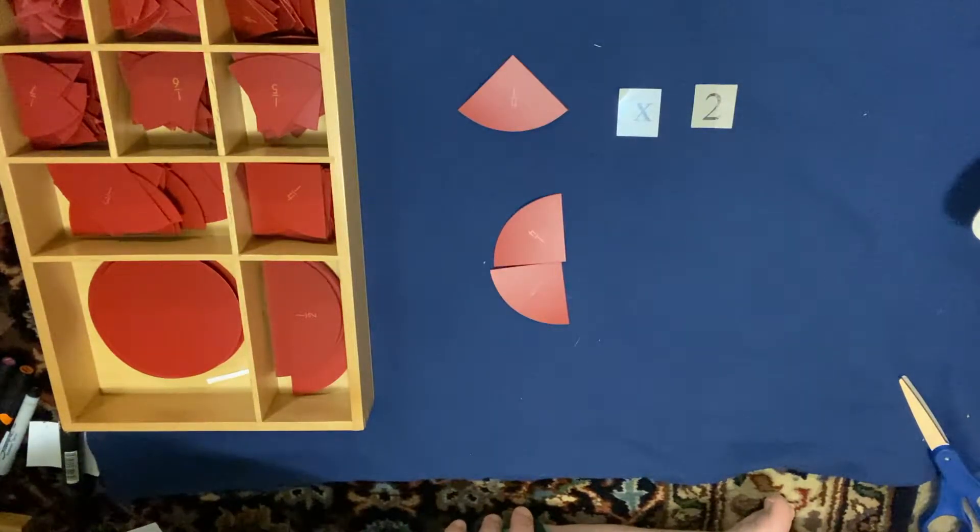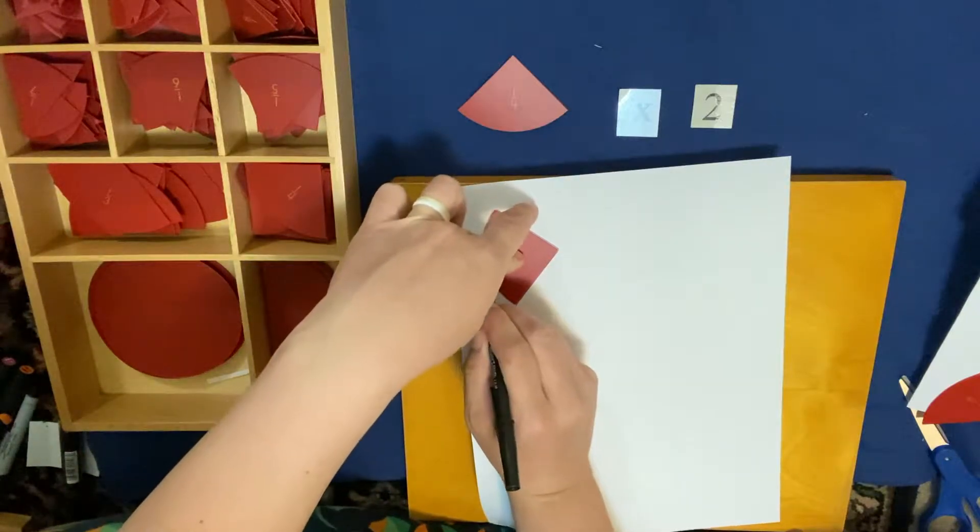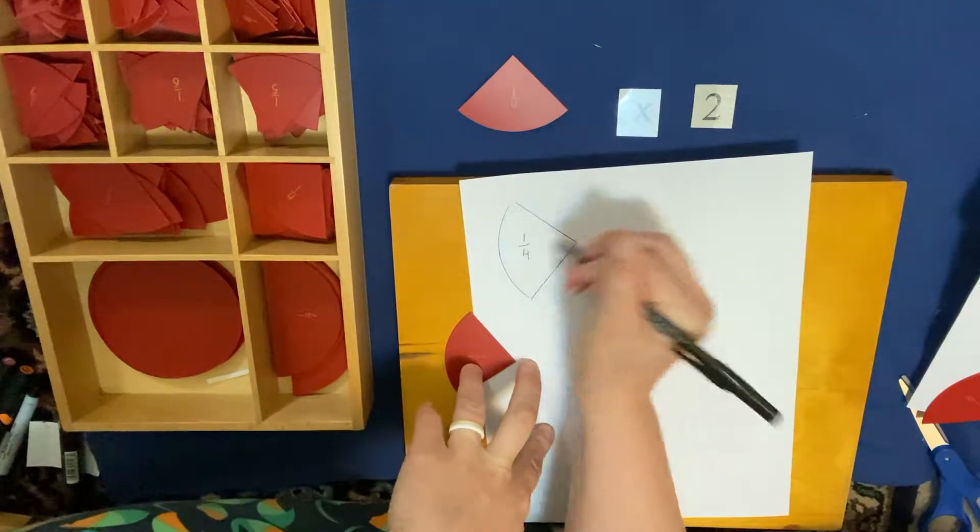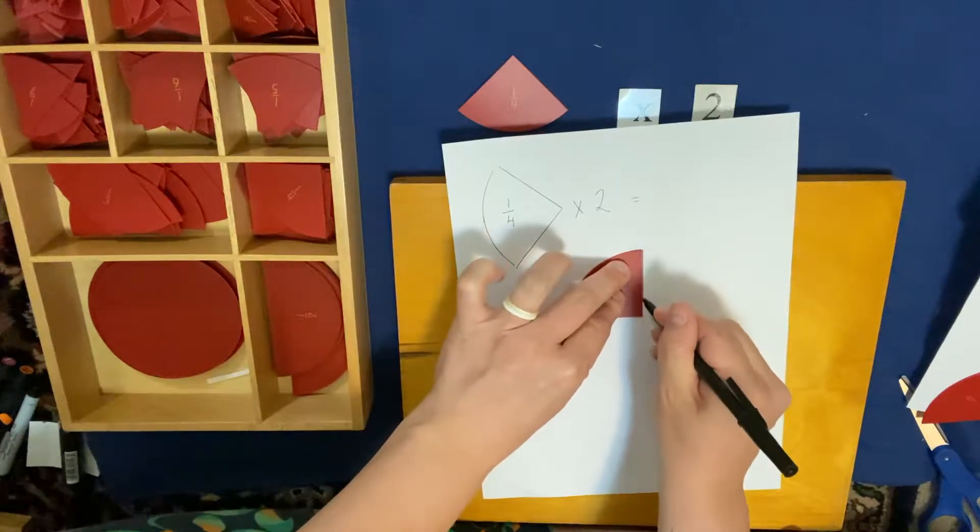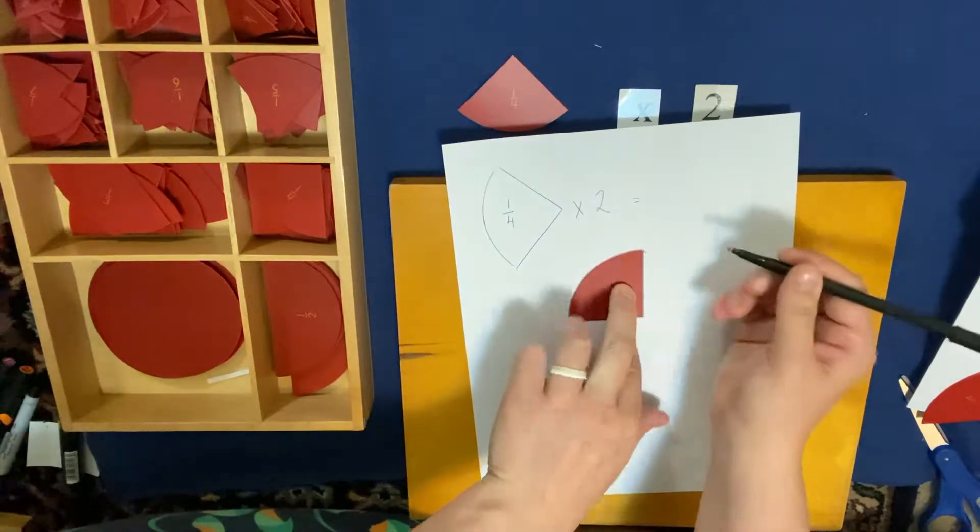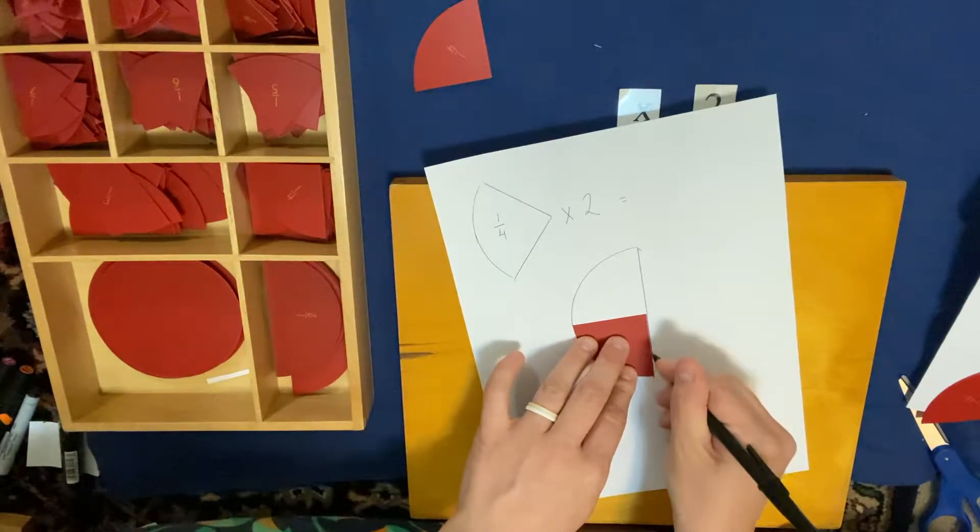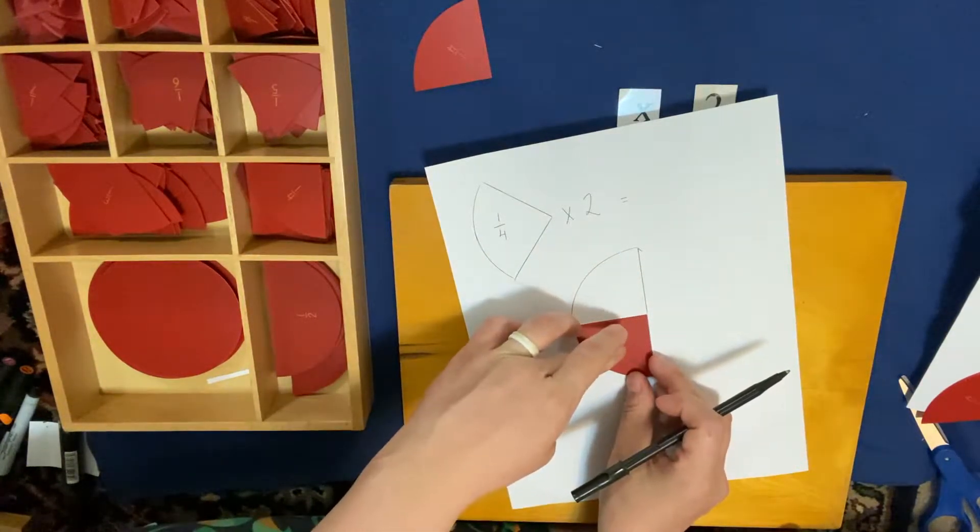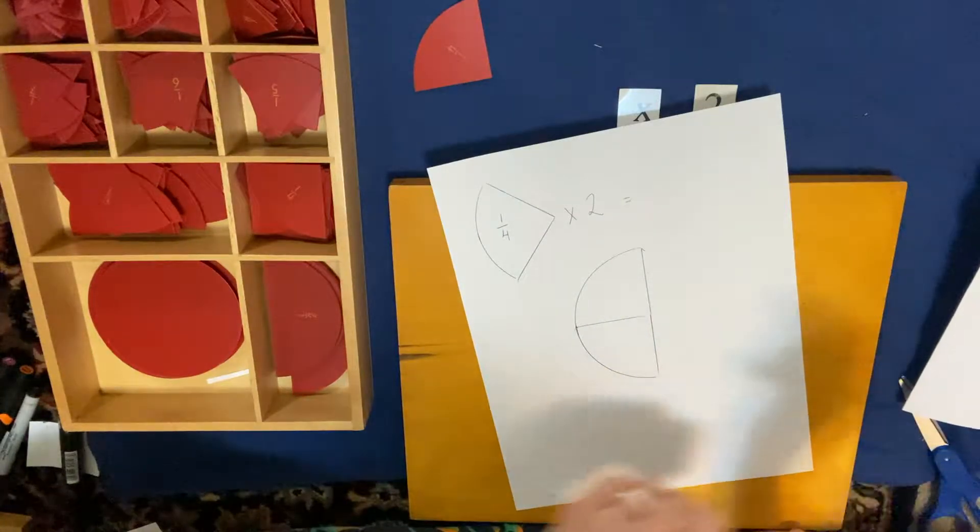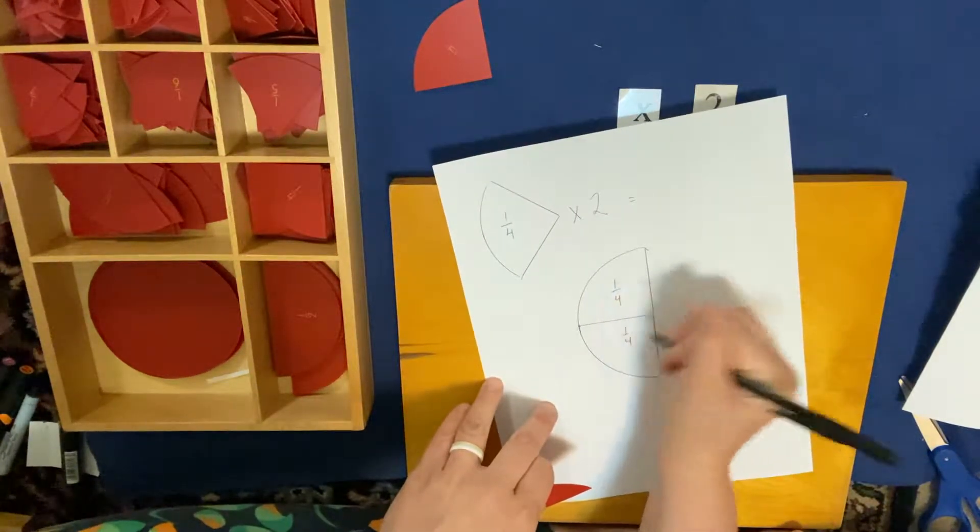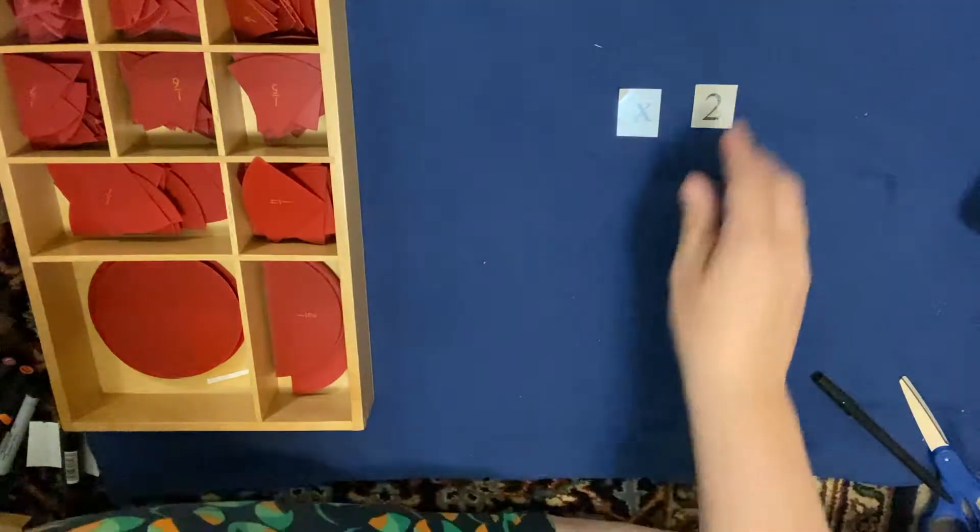So I'm going to grab some paper so that I can write this down. 1/4 times 2, which equaled 2/4. And I would trace that. Mine moved. I would trace, or if you're at home and you don't have hard fraction pieces to trace, you can print and cut them. And that equals 2/4. So these are the two different ways that we can write it.